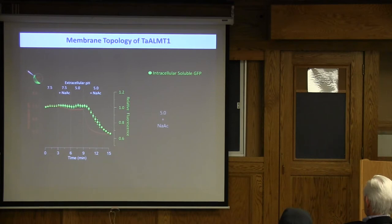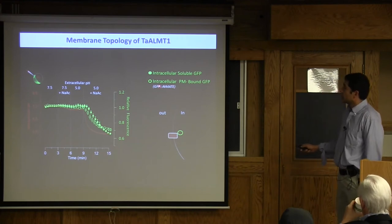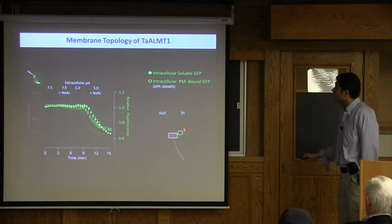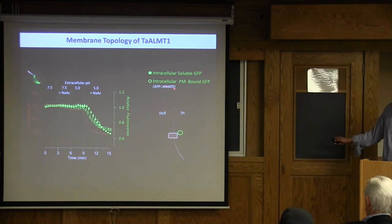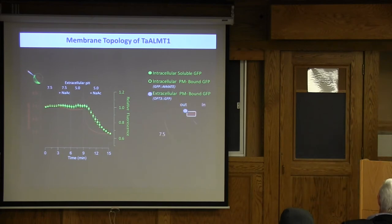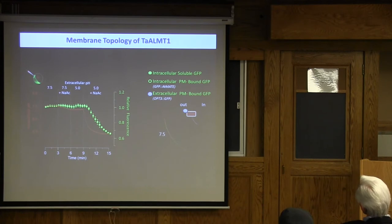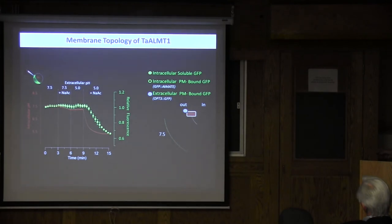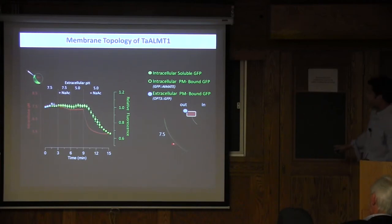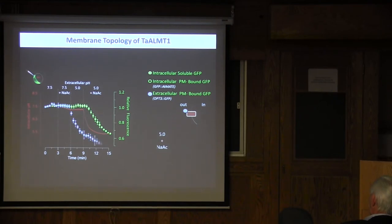Having established this methodology, we look at changes in relative GFP fluorescence through this set of solutions, shown by confocal imaging of the edge of the oocyte. At pH 7.5, the GFP intensity doesn't change; as soon as we add pH 5.0 plus sodium acetate, we obtain quenching of the GFP. We validated the technique using AT-MATE tagged at the N-terminus — showing intracellular localization — and OPT-3 tagged at the C-terminus where the C-terminus is located to the outside, confirmed by GFP quenching upon extracellular acidification. This gives us a system to determine whether a given N-terminus or C-terminus is located intracellularly or apoplastically.